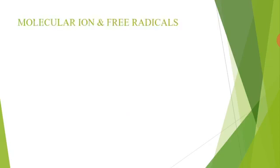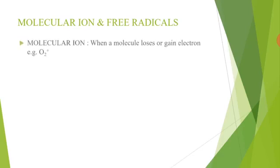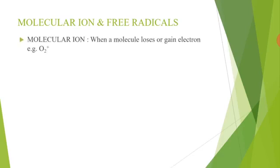Now we discuss molecular ion and free radical. First we discuss molecular ion. All of you know that when one or more atoms combine they form a molecule. So when a molecule loses or gains electrons, then the resulting species is called molecular ion. For example, when oxygen molecule loses one electron, then it forms O2+ ion.